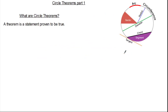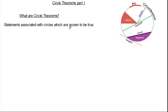So what are circle theorems? Before we look at circle theorems let's look at the word theorem. A theorem is simply a statement proven to be true. So that means circle theorems are statements associated with circles which are proven to be true.